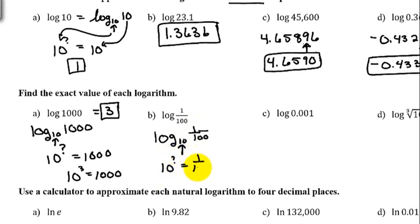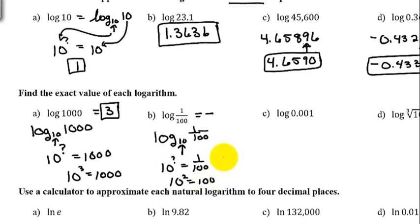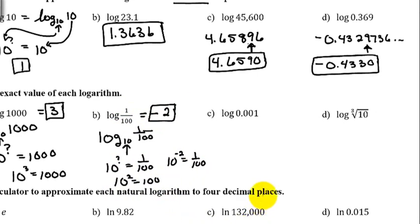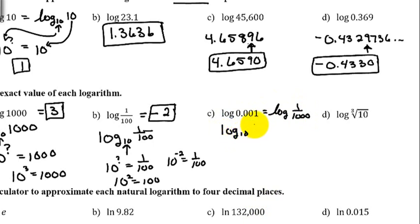For log of 1/100, we want to know what power to raise 10 to so that we get 1/100. To get 10 into the denominator we raise it to a negative power. Since 10 squared equals 100, that means 10 to the negative 2 equals 1/100, so log of 1/100 is negative 2. Next, log of 0.001 is the same as log of 1/1000, which is log base 10 of 1/1000.